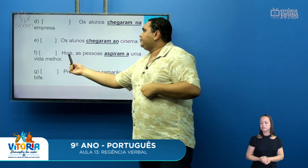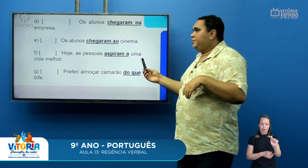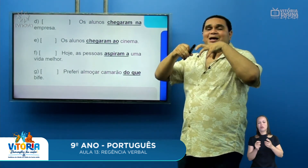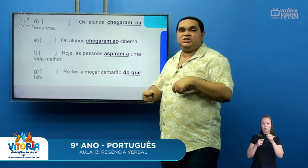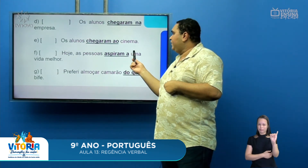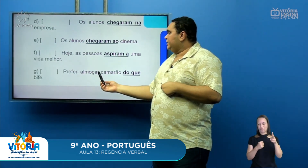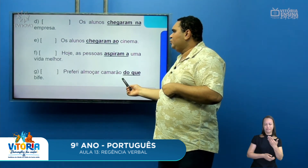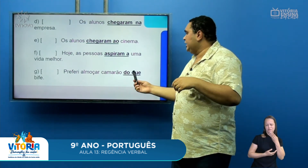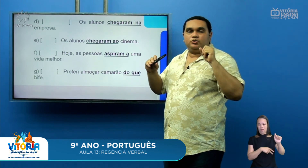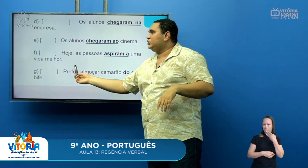Letra F: 'Hoje, as pessoas aspiram a uma vida melhor.' O verbo aspirar tem o sentido de você almejar, desejar, querer algo — nesse sentido, é transitivo indireto e sempre vai receber a preposição 'a'. Então, está verdadeiro. Letra G: 'Prefiro almoçar camarão do que bife.' Está falso. Com o verbo preferir, você sempre vai utilizar a preposição 'a', nunca 'do que'. Ou seja, 'eu prefiro isso a isso'. A frase está falsa.